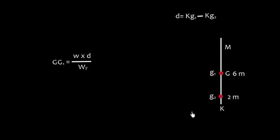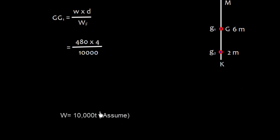This is given by the formula that GG1 is equal to w into d divided by W, where w is the weight shifted, d is the distance shifted, and W is the final displacement which is not going to change. So the w is 480 and small d is 4, and the W final is 10,000 tons. We have taken the value as 10,000 tons here. So we get this 0.192.